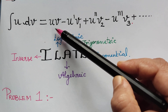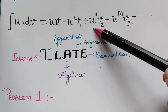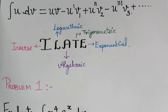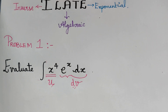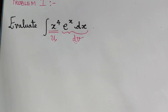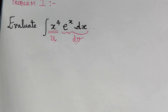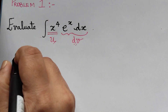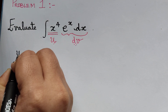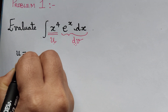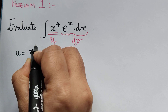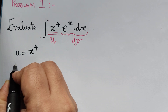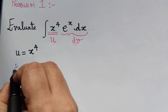Now we need to find u, v, u-dash, v1, u-double-dash, v2, and so on. First, we write u = x⁴.